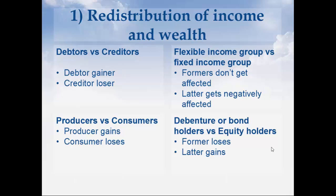For producers and consumers, producers' profits increase as a result of inflation. But for consumers, the purchasing power of money declines, so they have to pay more money to purchase the same amount of goods and services. Between flexible income group and fixed income group, the salary of the flexible income group automatically adjusts according to rate changes in the economy, so they are not affected. But the fixed income group like salaried employees would be adversely affected by price rises.